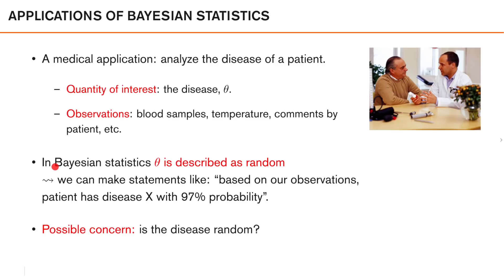An important aspect of Bayesian statistics is that theta — the disease of the patient in this case — is described as random, so it's a random variable. By doing this, we can calculate the probability distribution of the disease of the patient based on the observations that we have made. For example, we can make statements like: based on our observations, the patient has disease X with 97% probability.